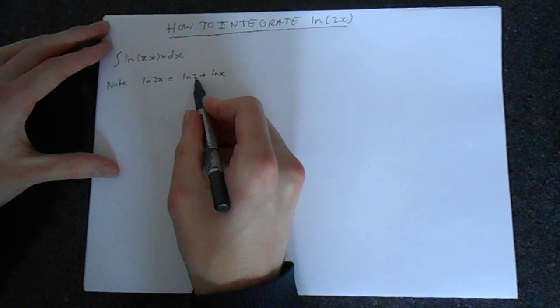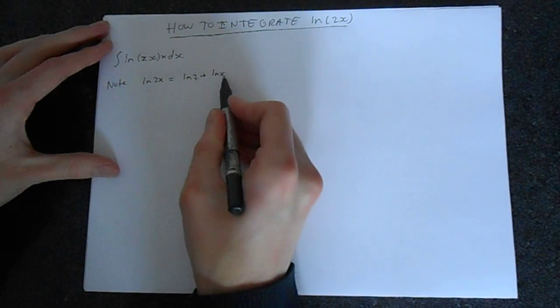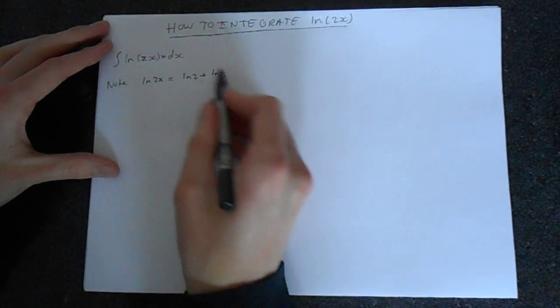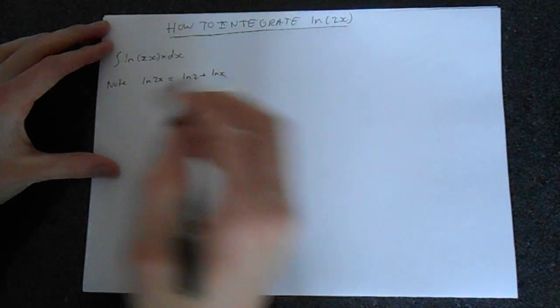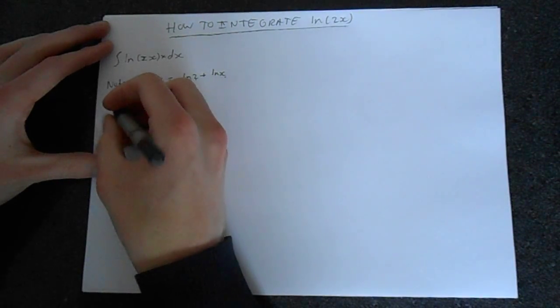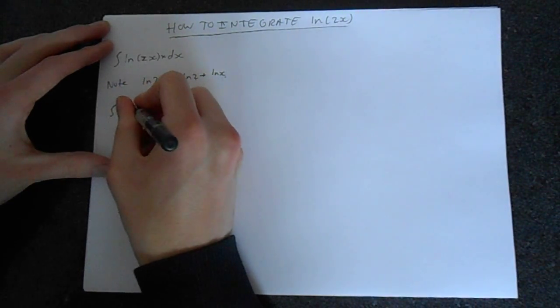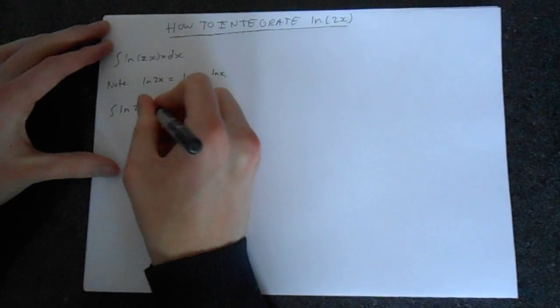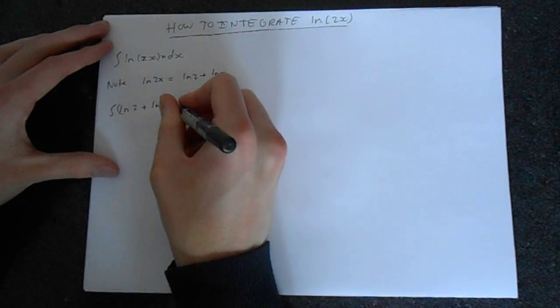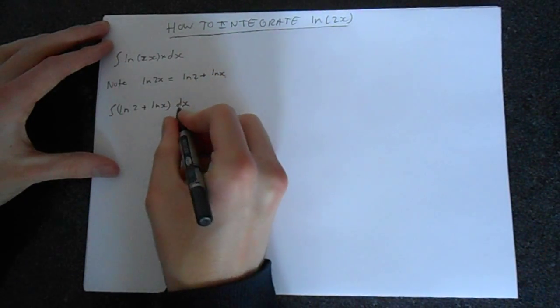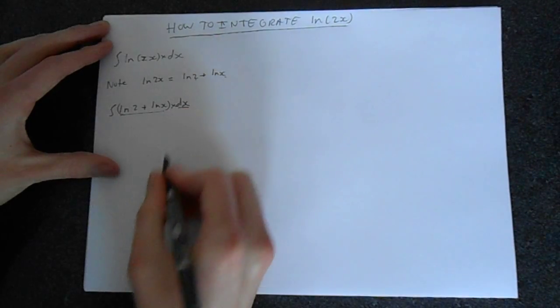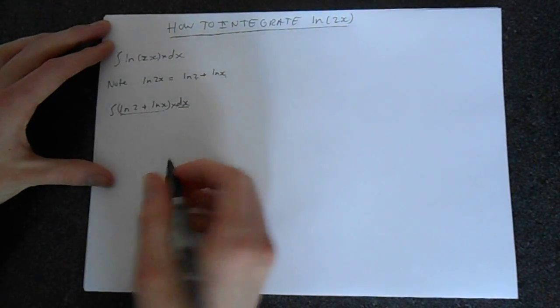The property when logs are added, they're multiplied. And this simplifies things. So we're now doing the integral of ln2 plus lnx dx. And we're thinking of this and this as being timesed, which they are.